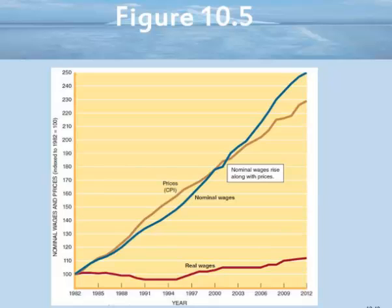For some examples: suppose your nominal income went up 5% this year and inflation went up by 3%. Then you would subtract 3 from 5 and say that your real wage has gone up by 2%. Suppose we have another year where your nominal income went up by 5%, but inflation went up by 6%. In that case, your real wage has gone down.